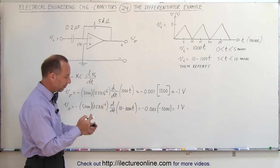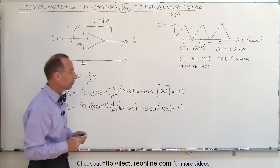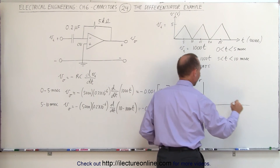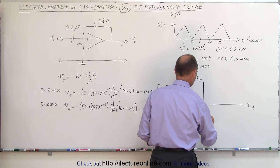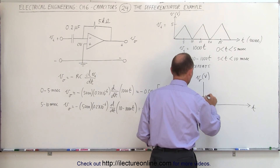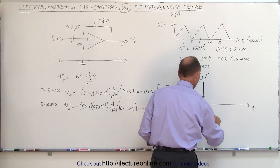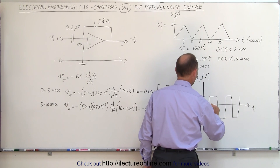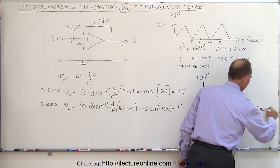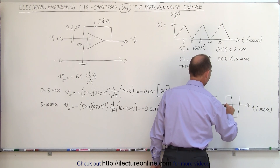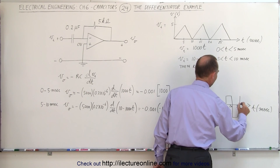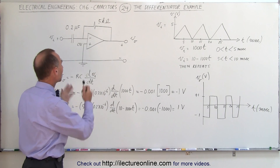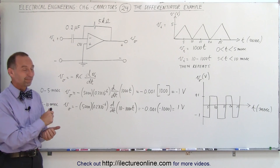So for the next five milliseconds it's positive one volt, then negative one volt, positive one volt — the output voltage alternates. V output as a function of time looks like a square wave: negative one volt, positive one volt, negative one volt, positive one volt, and so forth, every five milliseconds. The time axis is in milliseconds: 5, 10, 15, 20, 25, and so on. That's what the output voltage looks like with that input — because we have a differentiator circuit, and that's how it's done.